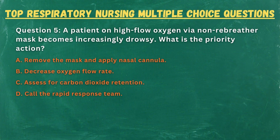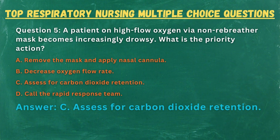Question 5. A patient on high-flow oxygen via non-rebreather mask becomes increasingly drowsy. What is the priority action? A. Remove the mask and apply nasal cannula. B. Decrease oxygen flow rate. C. Assess for carbon dioxide retention. D. Call the rapid response team. Answer: C. Assess for carbon dioxide retention.